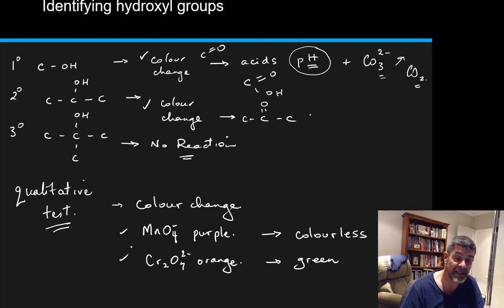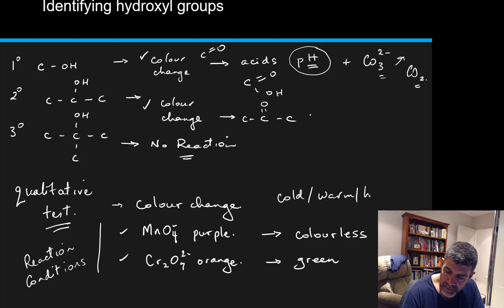It's important when you're discussing each of these processes to identify the reaction conditions. When you're carrying these out, recognize that we can use warm, cold, or hot solutions of the permanganate and dichromate ions, and we can make them either acidic or basic. Sometimes you'll find we've added hydrogen ions, for example, into our solutions to make them acidified solutions of permanganate or dichromate.